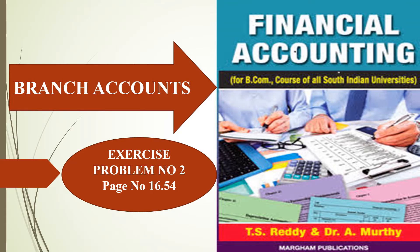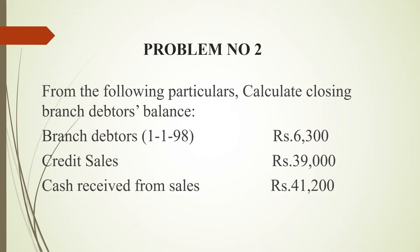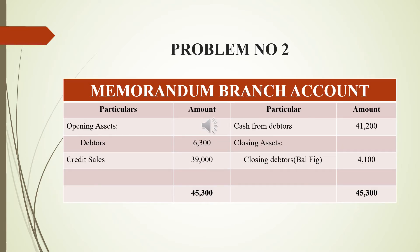Welcome to VL Academy. This is the branch accounts exercise, problem number 2, which is on page number 16.54. In this problem, we have a debtor system branch account with three details: opening debtors credit, sales, and cash received from sales. From these, we need to find the closing debtor — we are just finding out the missing figure.